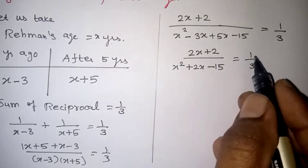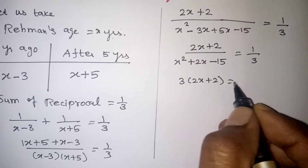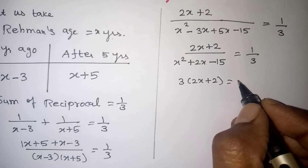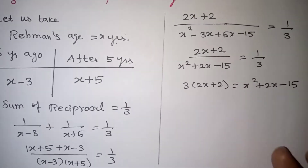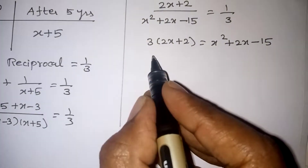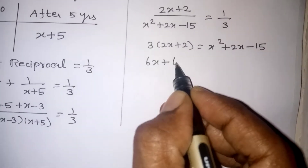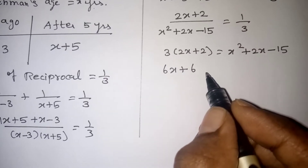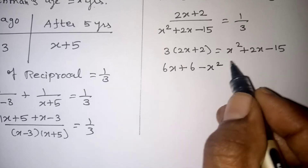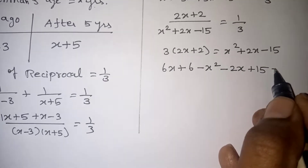Now do the cross multiplication. So 3 into (2X plus 2) equals 1 into (X squared plus 2X minus 15). Multiplying: 3 times 2X gives 6X and 3 times 2 gives 6. Bringing all terms to one side: plus X squared, plus 2X, minus 15 will give plus 15, which is equal to 0.